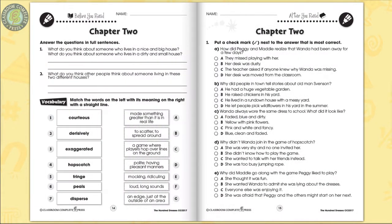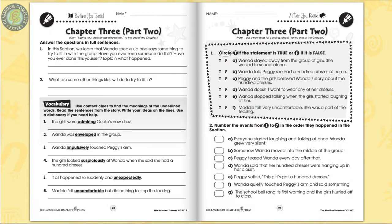Students share their impressions of people based on where they live and how they dress to get them into the right mindset prior to reading the story. They then use context clues to write the meanings of the underlined vocabulary words from the book.